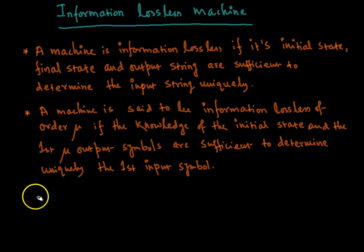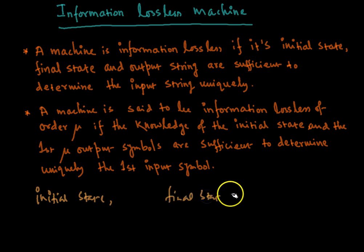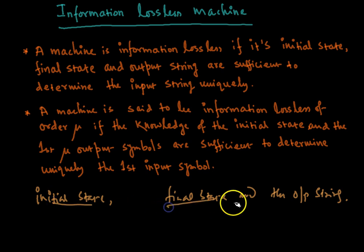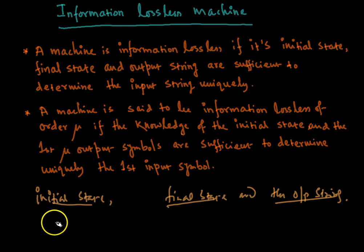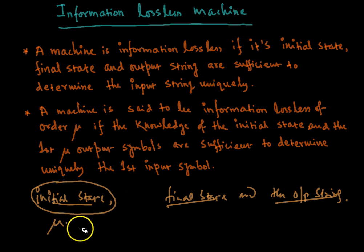To summarize: what we need is the initial state, the final state, and the output string. Given these three inputs, we can uniquely determine the input string of an information lossless machine. The order mu means that given the initial state and mu number of output symbols, we can determine the first input symbol. Now, how do we check whether a given machine is information lossless or not? We can do it by using a testing table and testing graph.